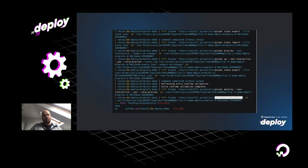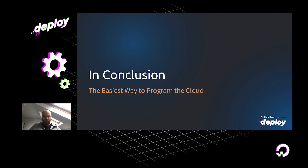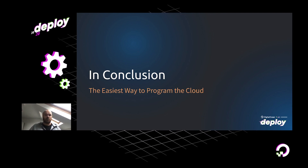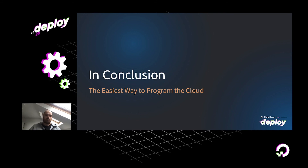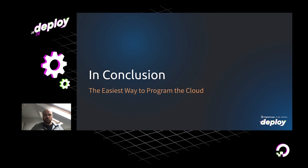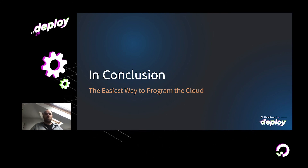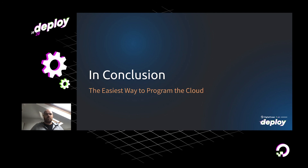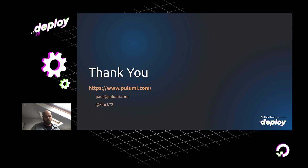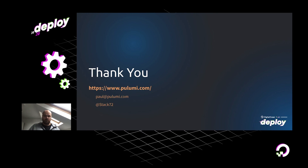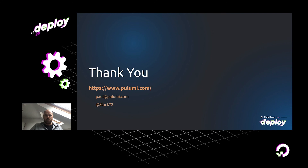We believe that as we start to move towards modern infrastructure as cloud, Pulumi is going to be the easiest way for a lot of teams to get there — because we've thought about what different teams need: testability, security, the CI/CD pipeline, reusability, versioning, and packaging. This is what a lot of teams are going to need and want as they make their cloud journey faster and increase their velocity to deploy applications in the cloud. Thank you so much for your time — you can reach me at paul@pulumi.com or tweet me at stack72.